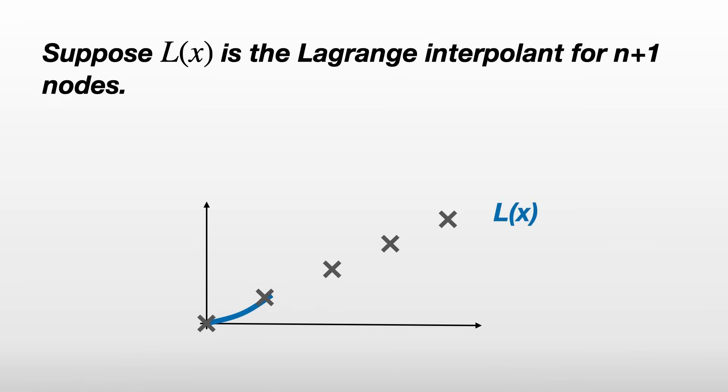What is the polynomial produced by the Lagrange interpolation formula? I just want to finish off with a discussion about the nature of the polynomial we're left with. Suppose L(x) is the Lagrange interpolant for n+1 nodes. We know already that this is of order P_n.